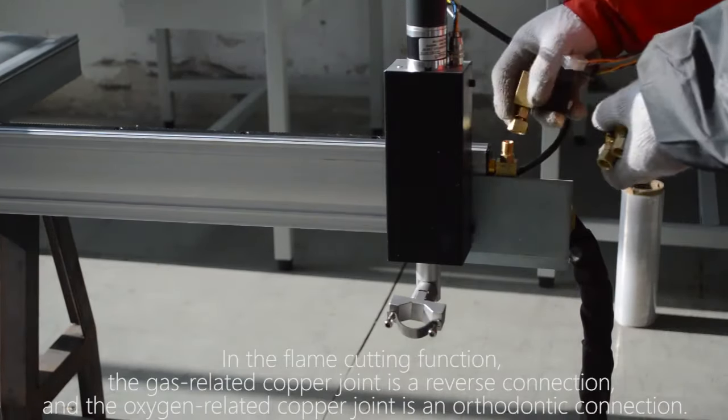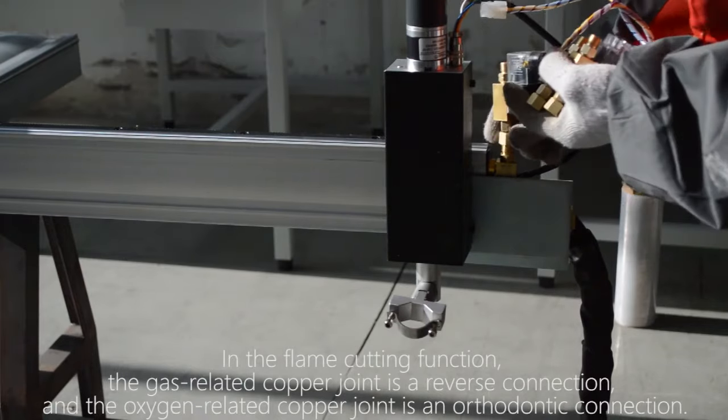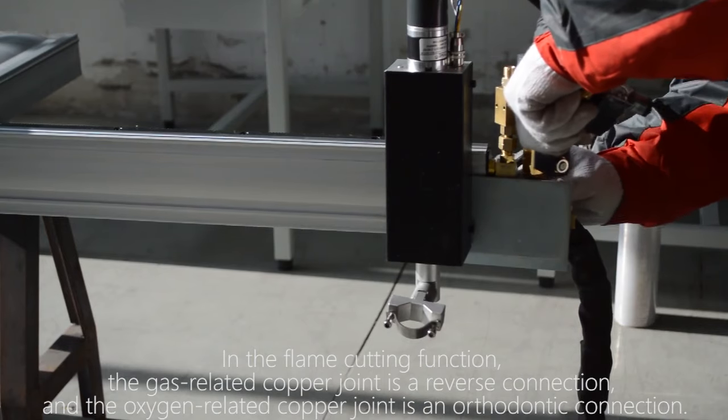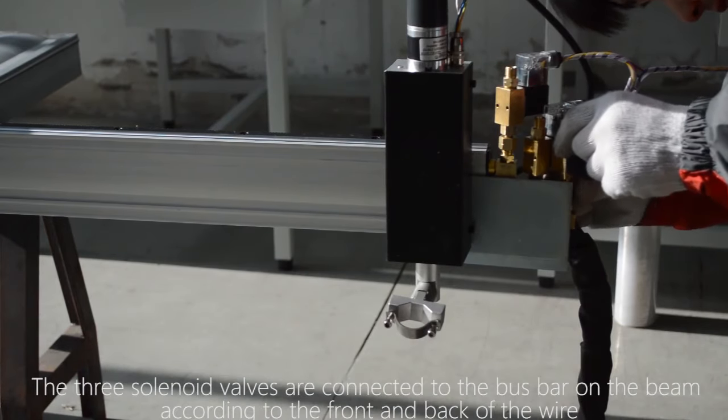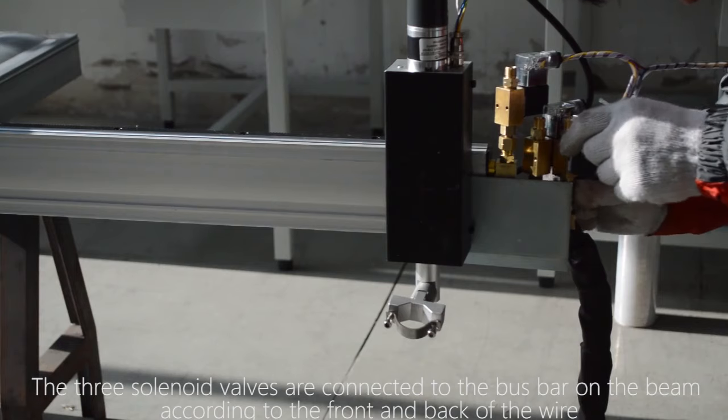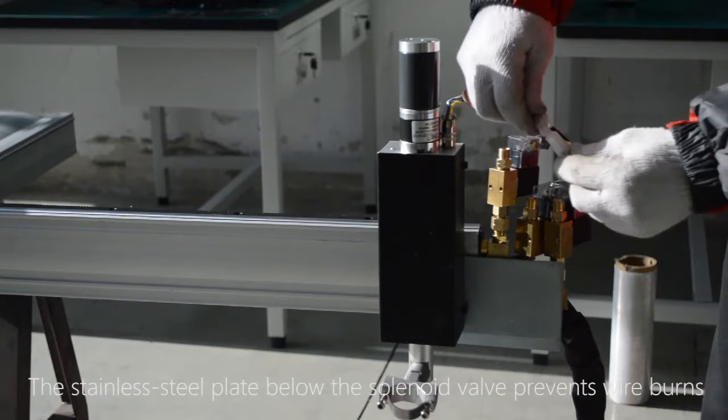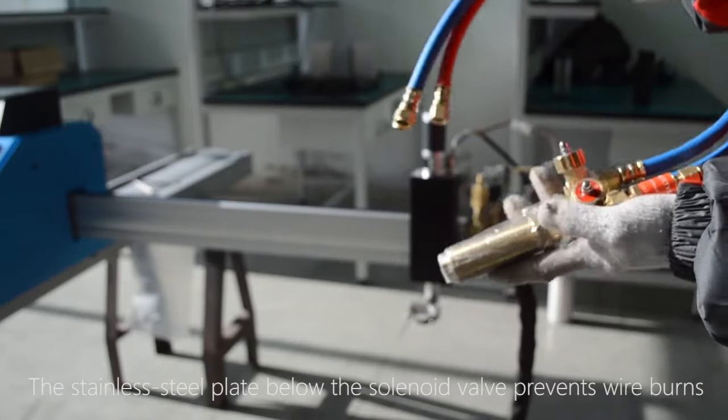In the flame cutting function, the gas related copper joint is a reverse connection and the oxygen related copper joint is an orthodontic connection. The three solenoid valves are connected to the bus bar on the beam according to the front and back of the wire. The stainless steel plate below the solenoid valve prevents wire burns.